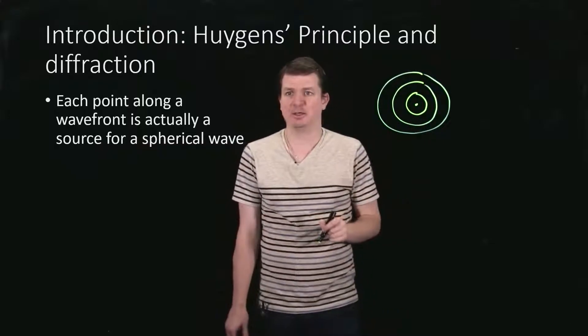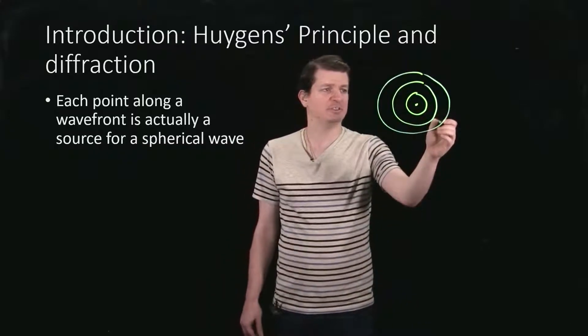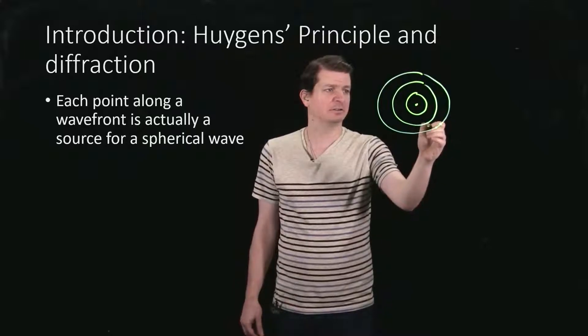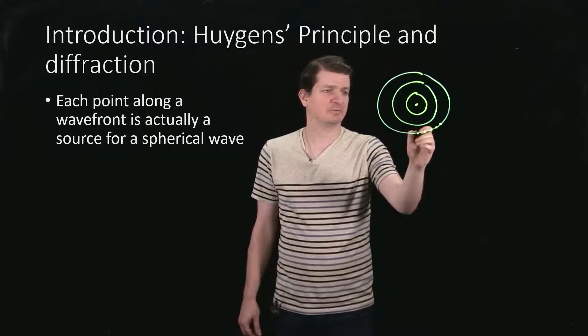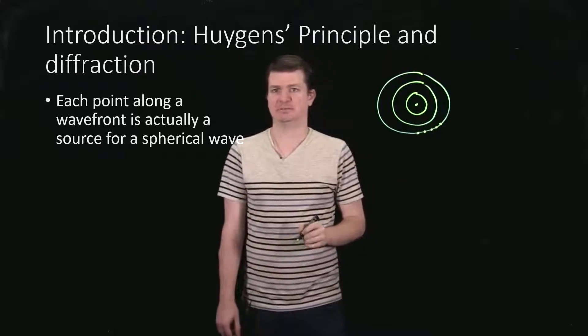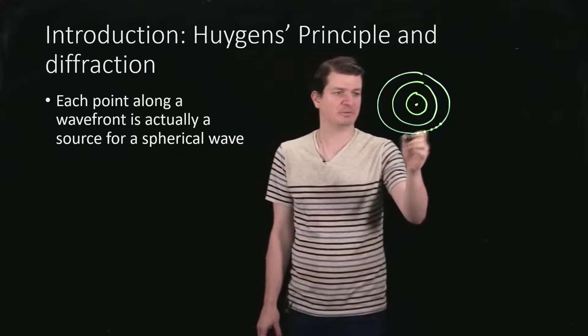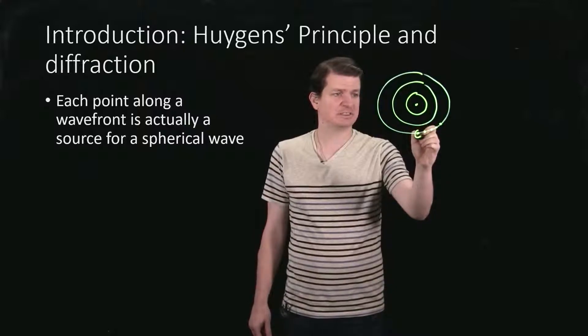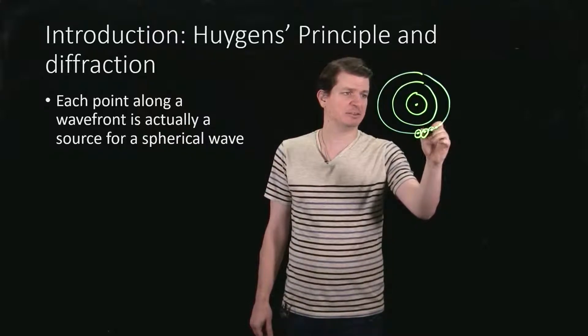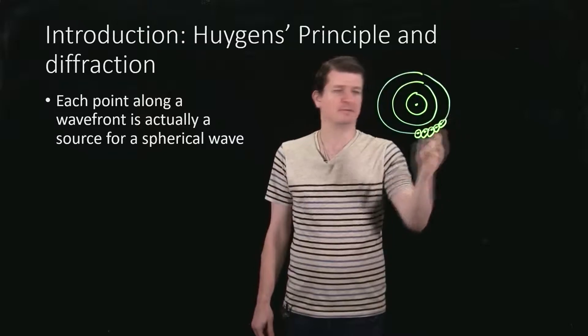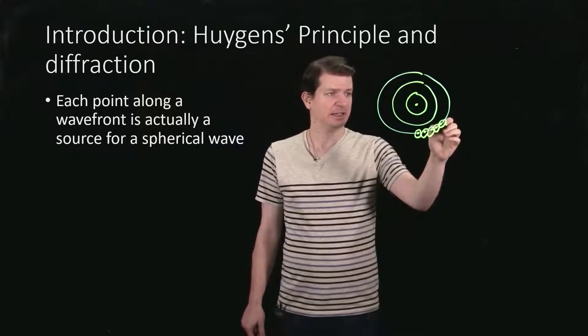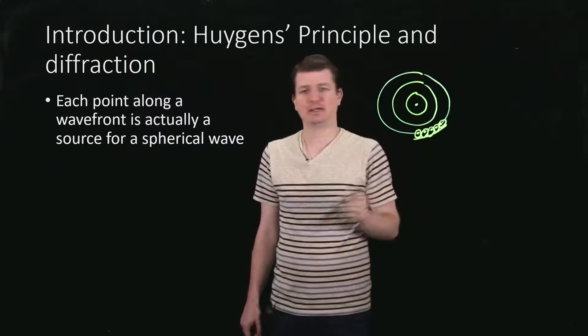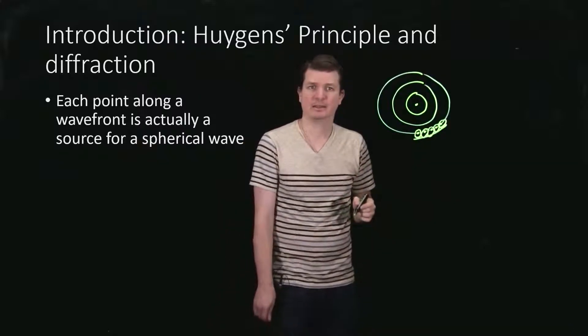Huygens' Principle says, well, sure, that's how you can represent it, but what's actually happening is every single point along here is its own source for another circular wave, or really spherical if we're doing this in 3D. So what happens is each one of those emits a little bit of a wave, and you can form the next one as the superposition of those. That's how you get the next wave front.